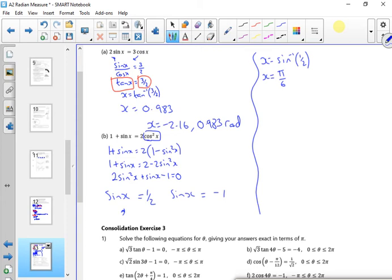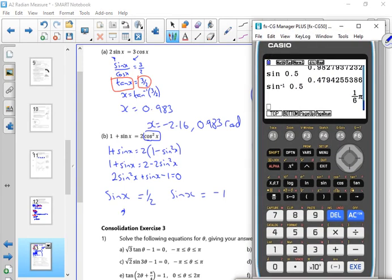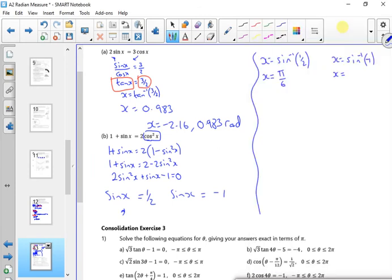And I've got x is inverse sin of minus 1, which should be pi by 2. Let's try it. So shift, sin, minus 1. So minus a half, pi over 2.